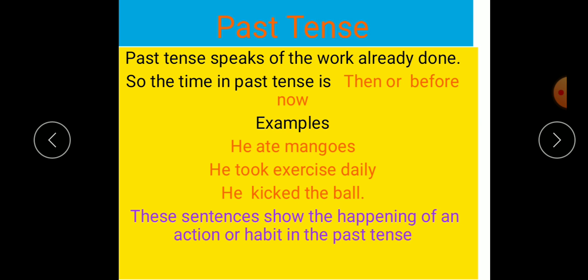Jaise hum Urdu mein kehte hai, tab. Dear kids, let's learn with examples. He ate mangoes. Yarni ki mango khane ka kaam hua hai. We can say past tense shows the happening of an action or habit in past. Joh kaam, joh action hui hai, usko past tense kaha jata hai.